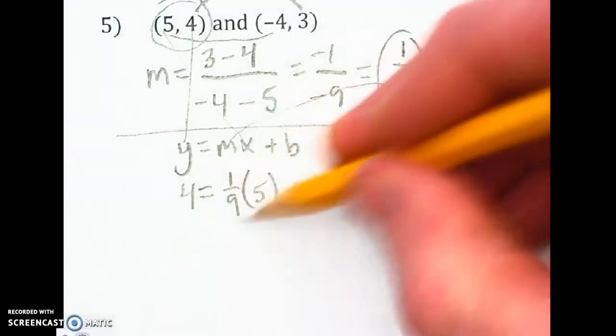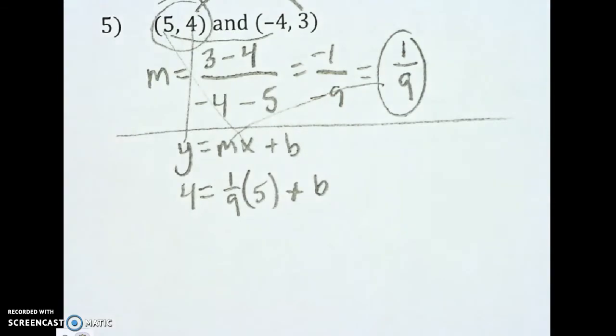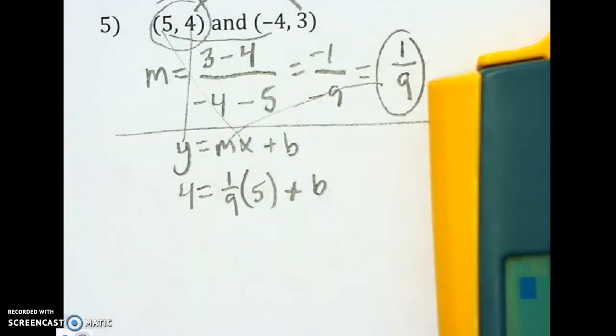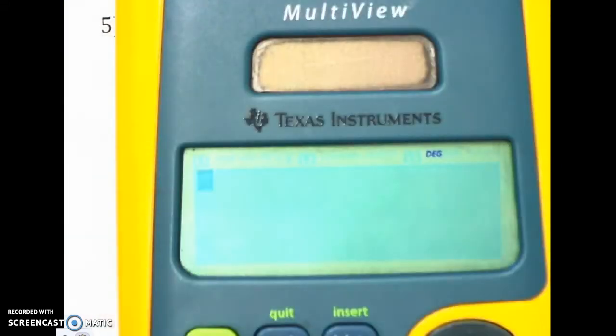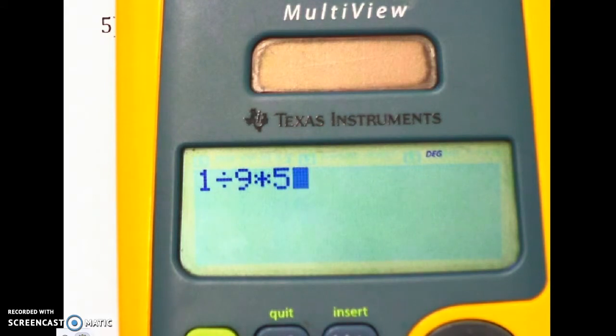Okay, now I need to times this together right here. If you don't know how to do that, I'll show you how to do that in the calculator. It's going to be 5 times 1 ninth. Or you can do 1 divided by 9 times 5 just like this.